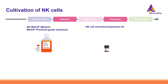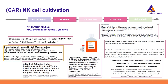There are two main products for activation and expansion that I want to present with supporting data. First is the NK MACS Medium in combination with premium-grade cytokines. This medium is now widely used by NK cell researchers and CAR-NK cell researchers, with numerous publications using it in combination with cytokines. The medium is also available in GMP grade, enabling later transition to a clinical-grade setting.